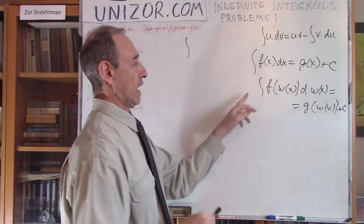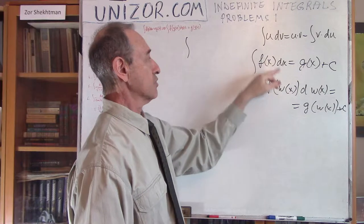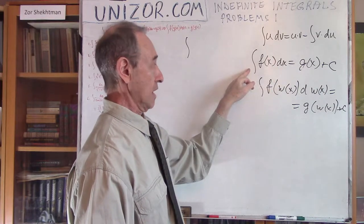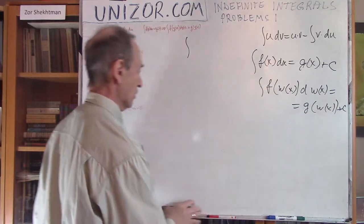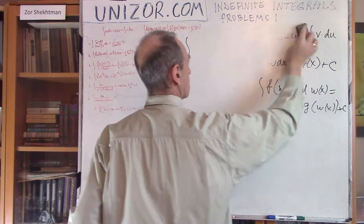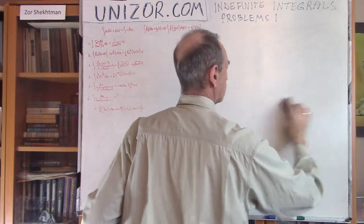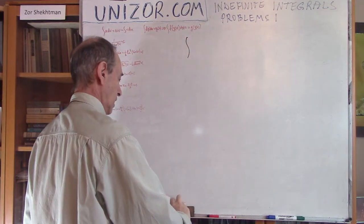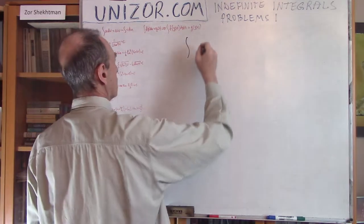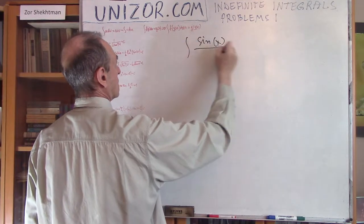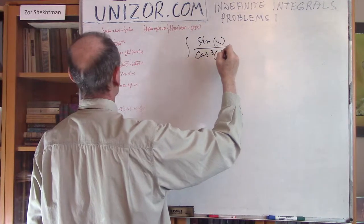I consider these two rules as known — there are a couple of lectures I did before to prove them and give examples. Now let's go to concrete examples. The first integral is: sine of x times cosine cubed of x, dx.